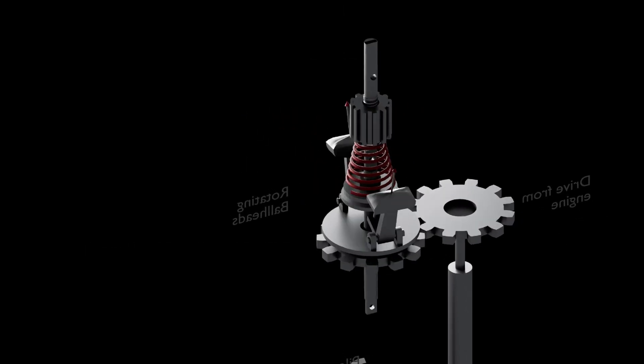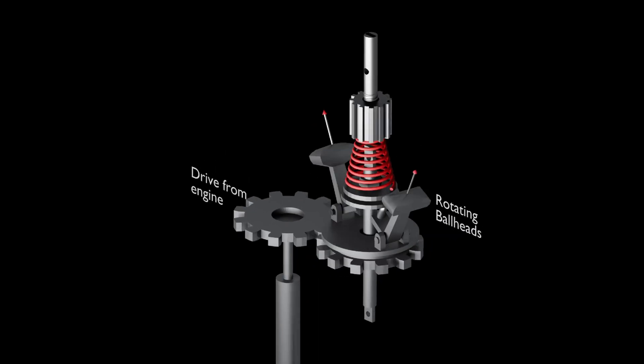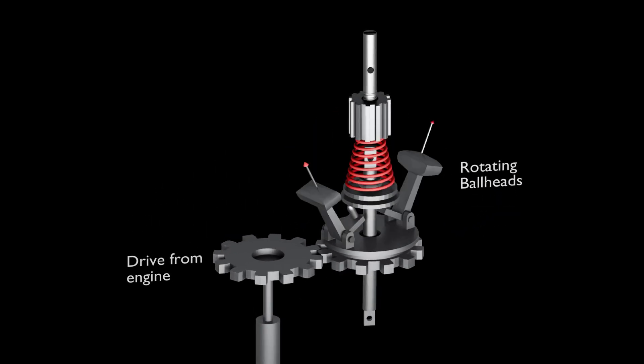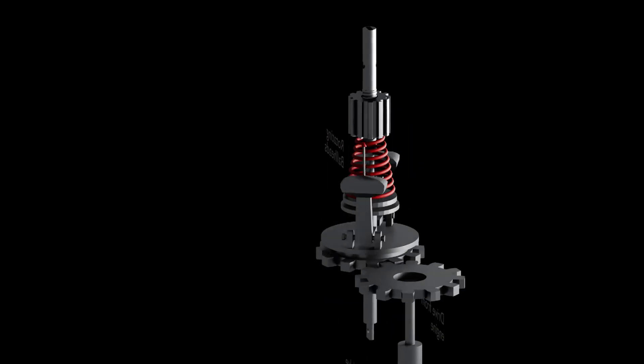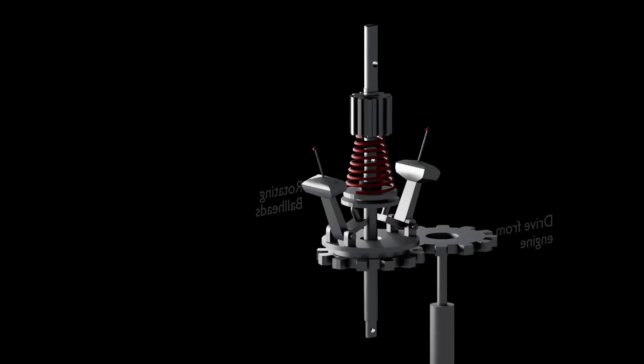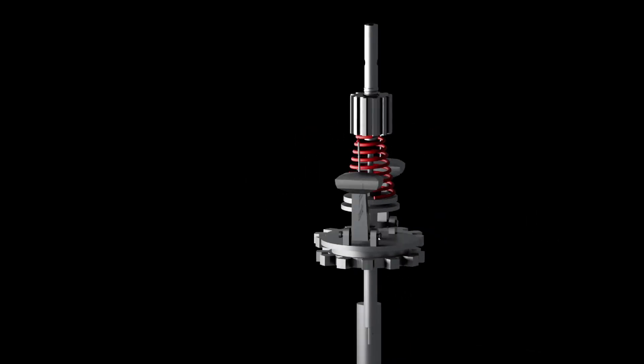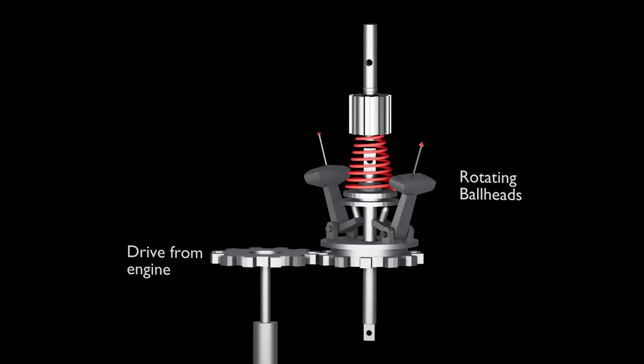However, when engine runs up to say 620 RPM, the flyweights rotate at higher speed and move further away from the axis of rotation. The opposite happens when engine speed drops to say 580 RPM. Flyweights, due to lower centrifugal force, come closer to the axis.